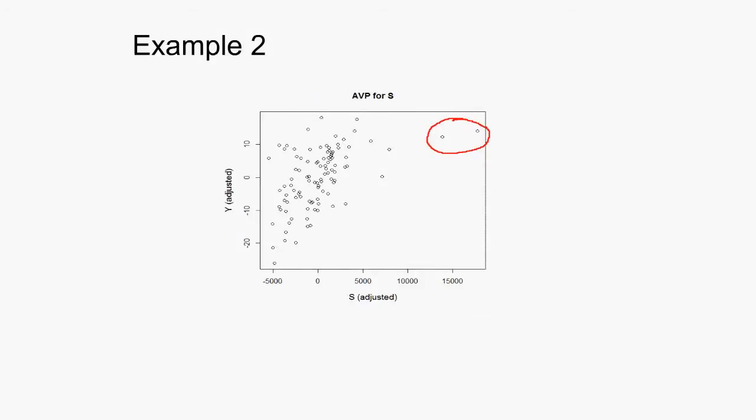Example 2. The AV plot for S shows there is a cluster of high leverage points to the right. The thing to do is assess these points by conducting influence analysis. Assess the sensitivity of model output when unusual points are removed.